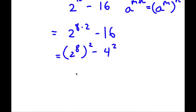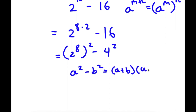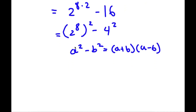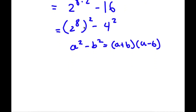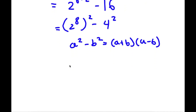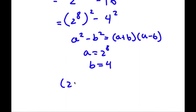Now if I have something in the form a squared minus b squared, this is equal to a plus b times a minus b. So 2 to the power of 8 squared minus 4 squared — in this case a is equal to 2 to the power of 8 and b is equal to 4. So now I have 2 to the power of 8 plus 4, times 2 to the power of 8 minus 4.